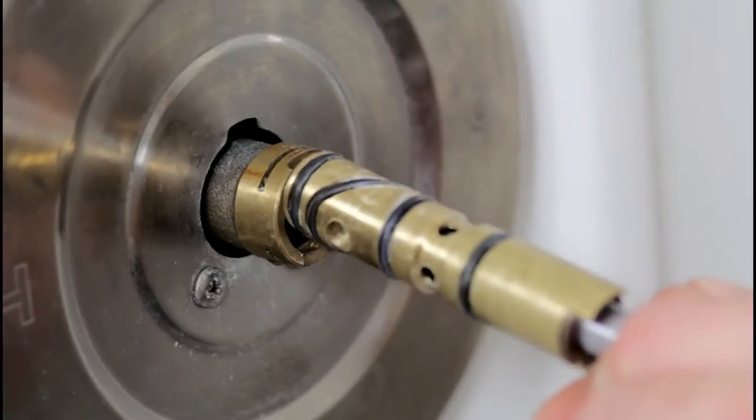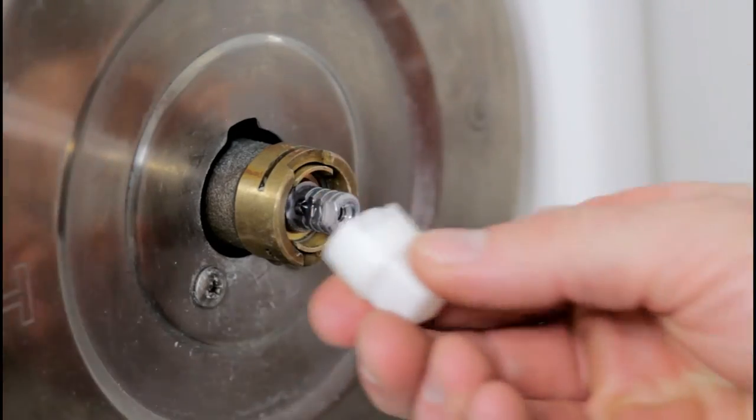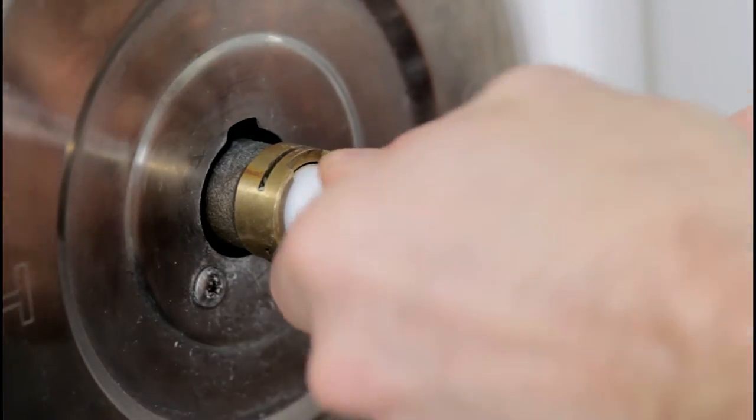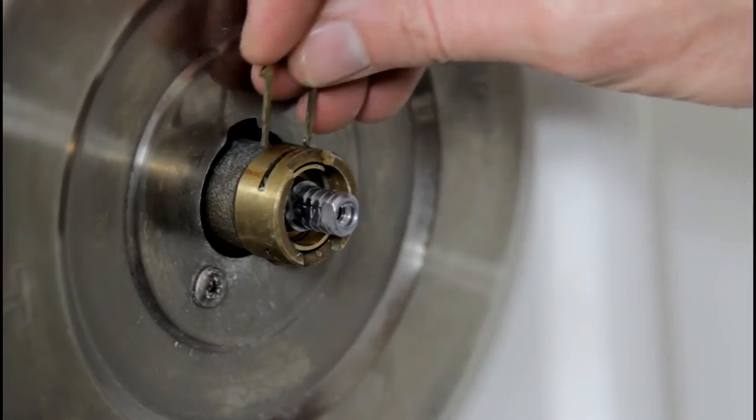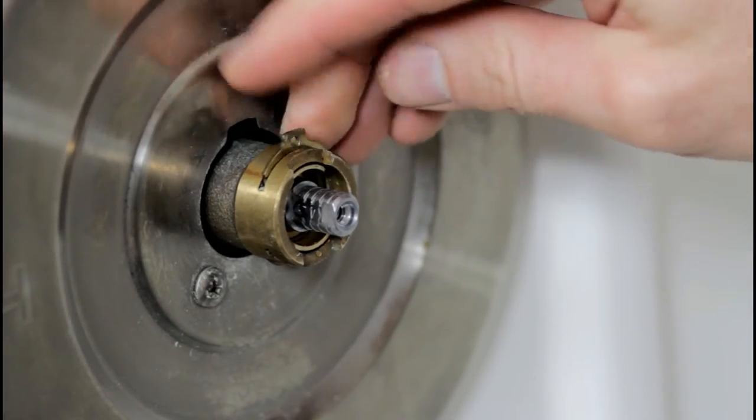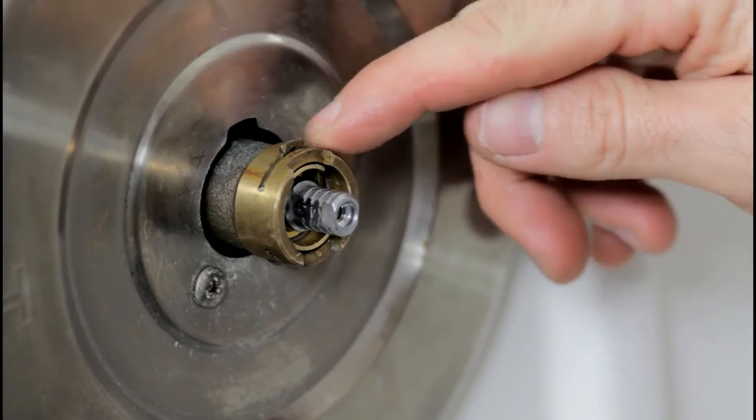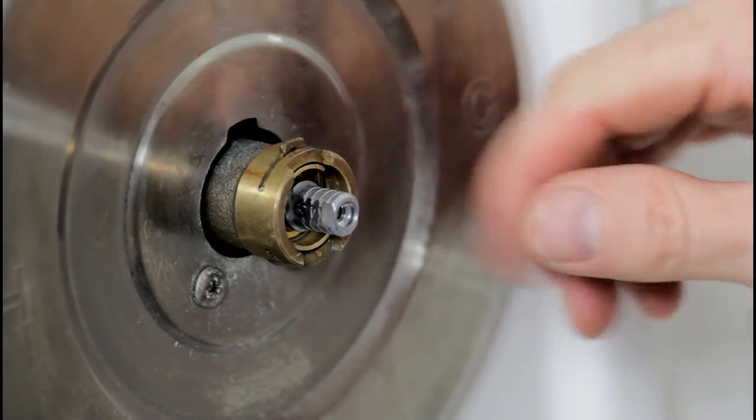Once you've applied enough lube, insert the cartridge back into the faucet. Use that white plastic tool again to line everything up so that you can insert the clip from the top down. Make sure the clip really holds tight on the top and the bottom. You'll know when you have it in just right.